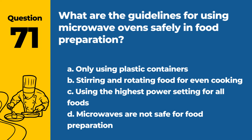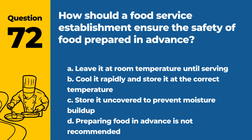Question 71. What are the guidelines for using microwave ovens safely in food preparation? a. Only using plastic containers. b. Stirring and rotating food for even cooking. c. Using the highest power setting for all foods. d. Microwaves are not safe for food preparation. Answer: b. Stirring and rotating food for even cooking. This ensures food is cooked evenly and safely in a microwave.